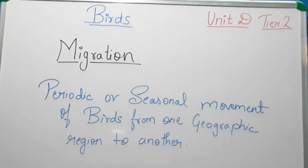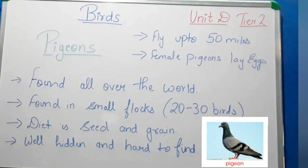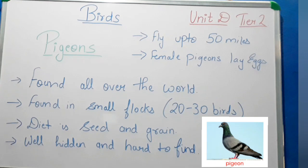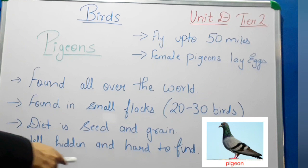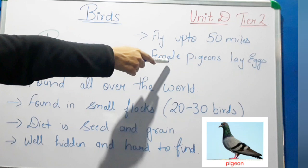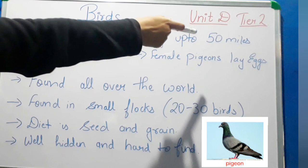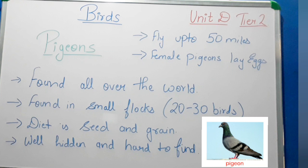Now let's study about pigeons. Pigeons are found all over the world and are found in small flocks of around 20 to 30 birds. Their diet is seed and grain. They are very well hidden and hard to find. The female pigeon lays two white eggs at a time. Pigeons can fly up to 50 miles an hour and as far as 600 miles a day.